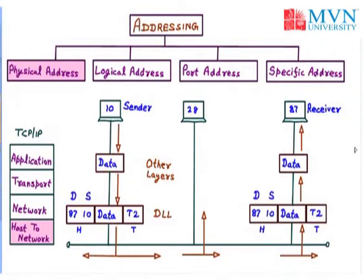The bus broadcasts the frame to all computers. System 28 discards the frame and system 87 accepts it because the destination physical address matches the receiver's address. At the receiver's data link layer, the frame with header and trailer is received. The other layers discard the header and trailer, leaving only the data, which is sent to the receiver (87). So that is how we understand the physical addressing scheme.